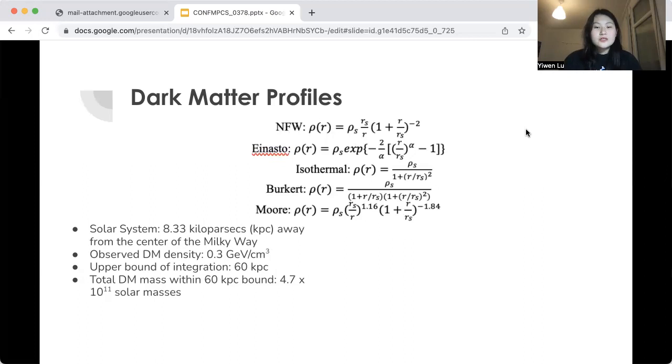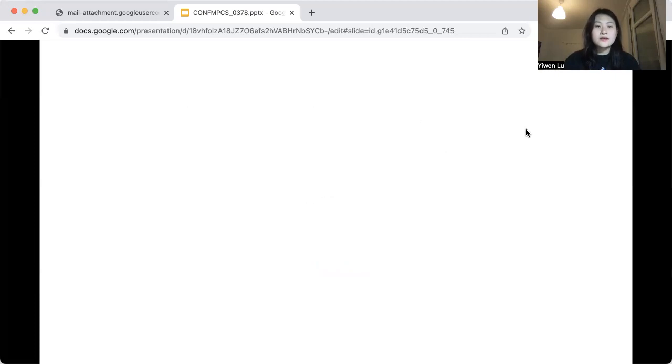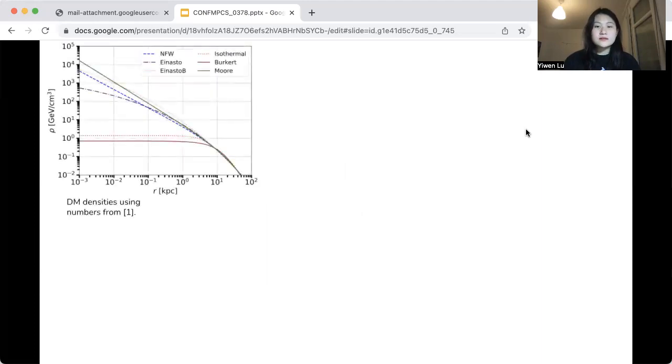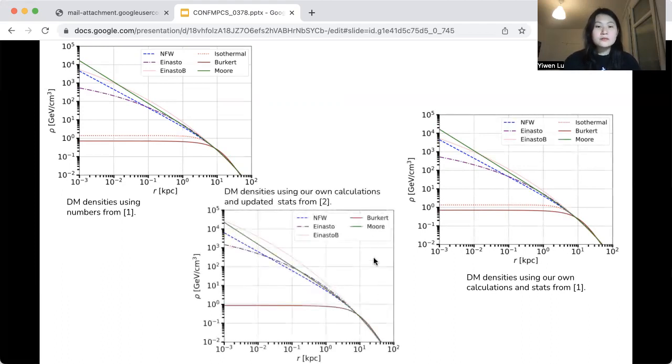I also performed the same procedure using updated data values from more recent observations. And these are the resulting graphs from the dark matter profile program. This graph is the same as one of the reference articles that I used. And as you can see, the graph here compiled through my previously described procedure is almost exactly the same. And we also discovered that the isothermal profile is not compatible with the updated values and therefore did not graph it, as you can see in this final third graph.